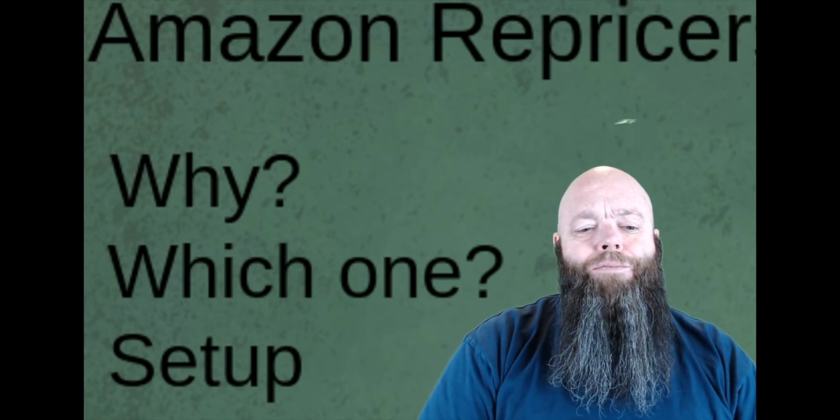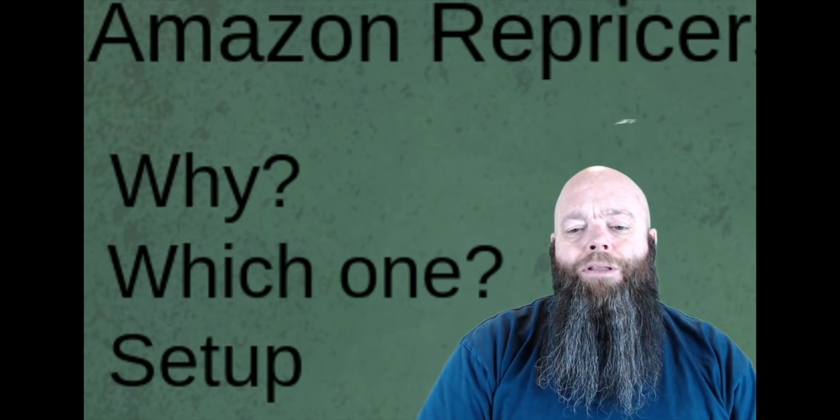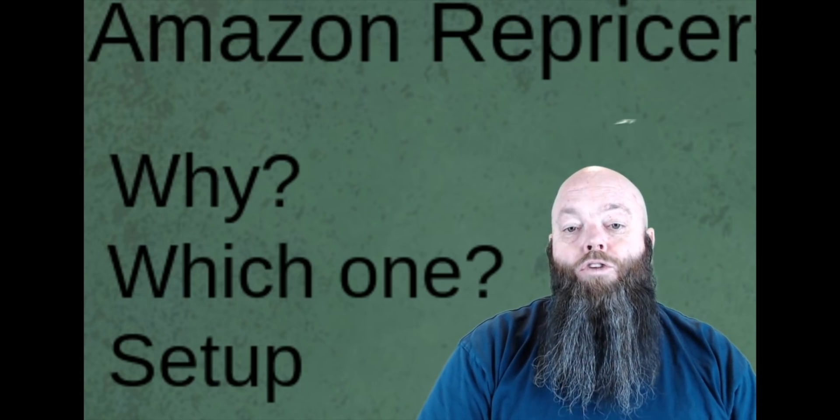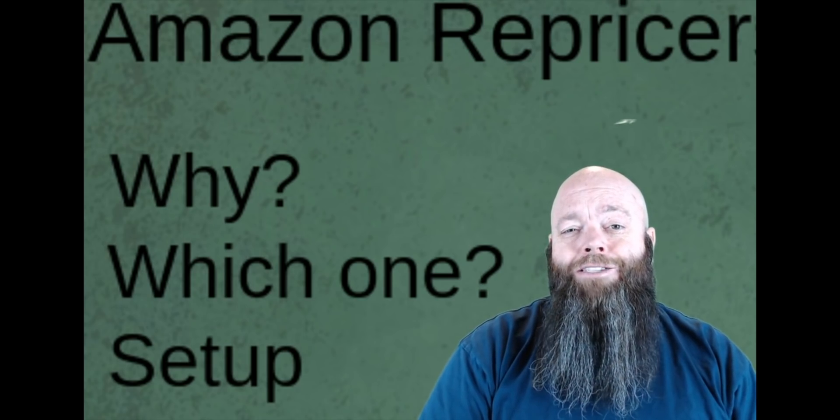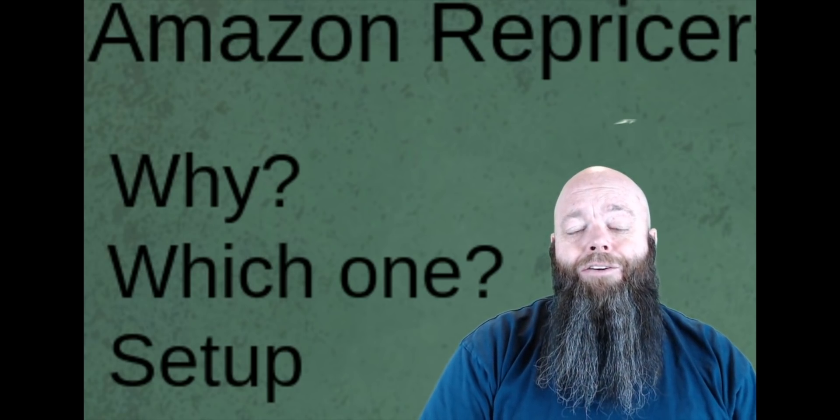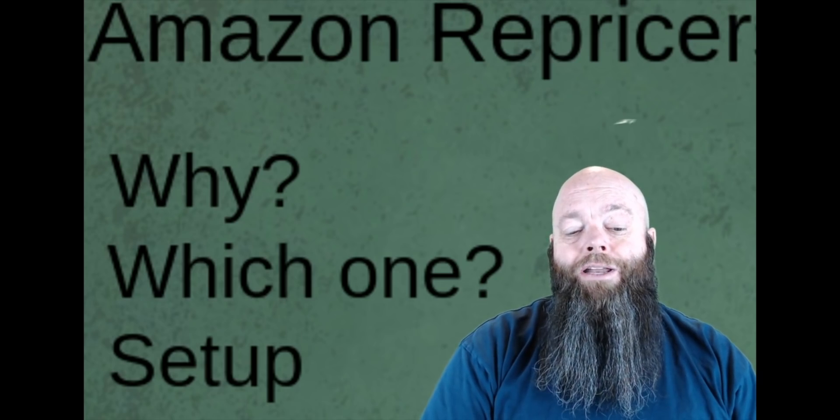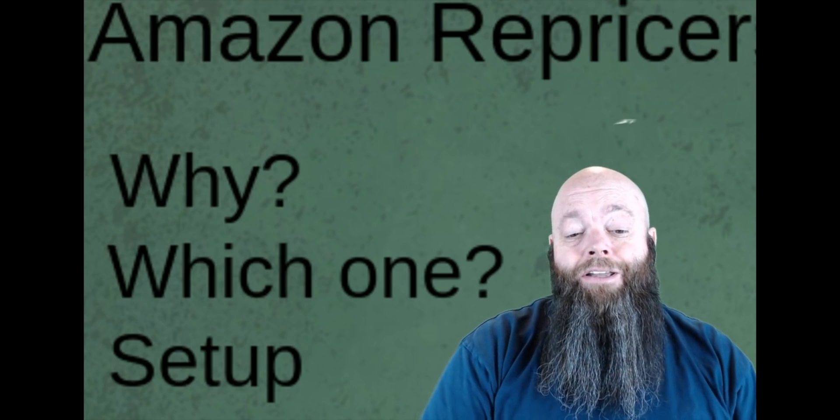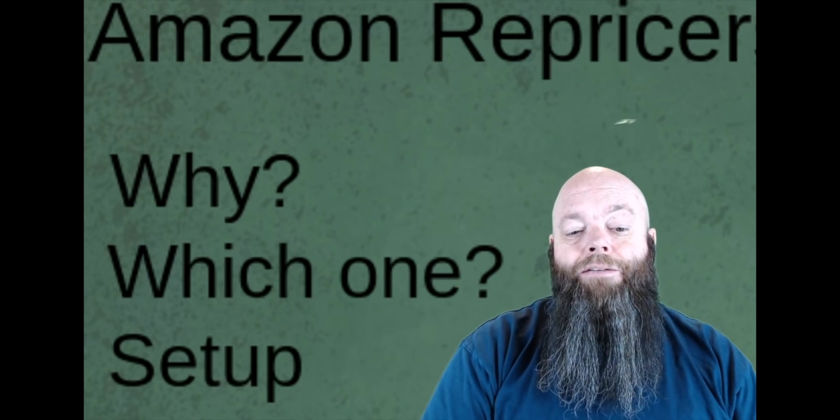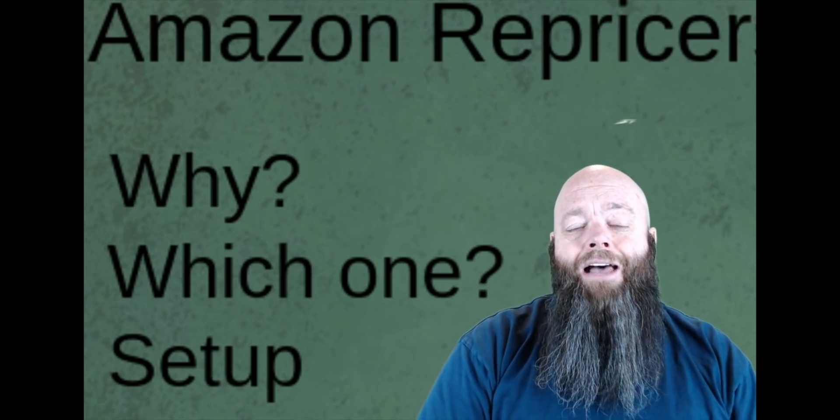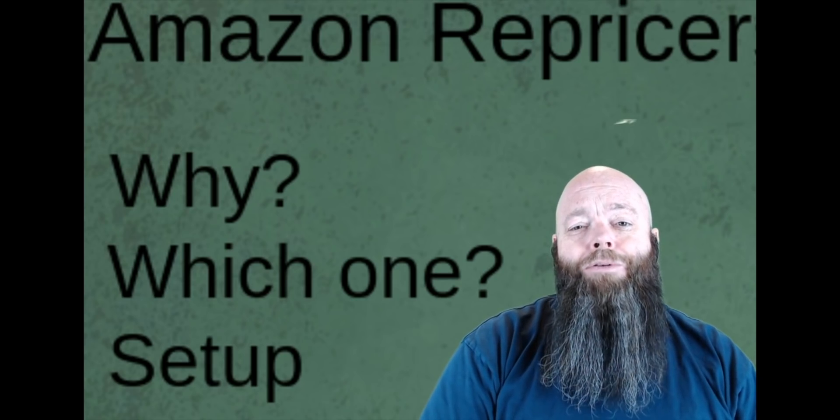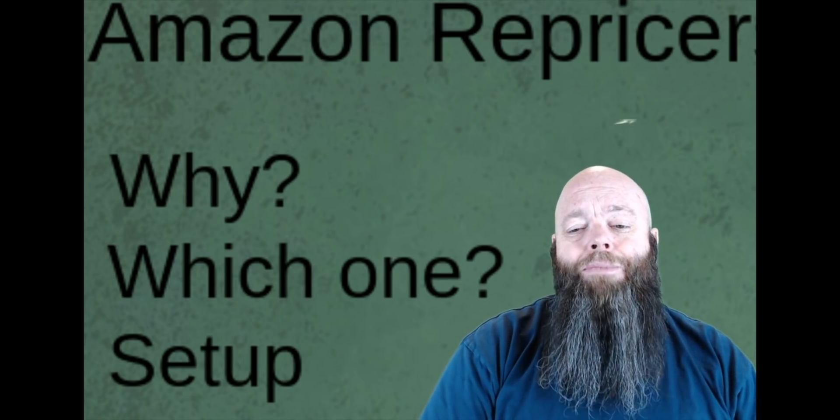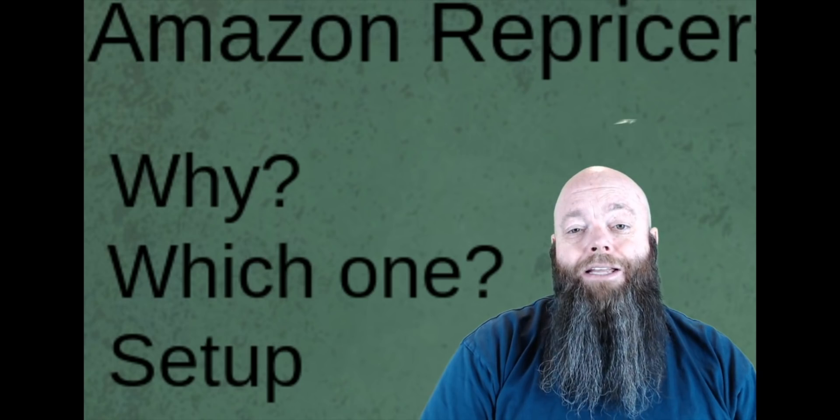The one thing I like about some of the algorithmic repricers is you have the ability not to reprice against someone who is not in stock or is in back order. You also can eliminate merchant fulfilled, which I generally do both of those. Then everyone else I'll either match or maybe a penny less, but be careful with the penny less.